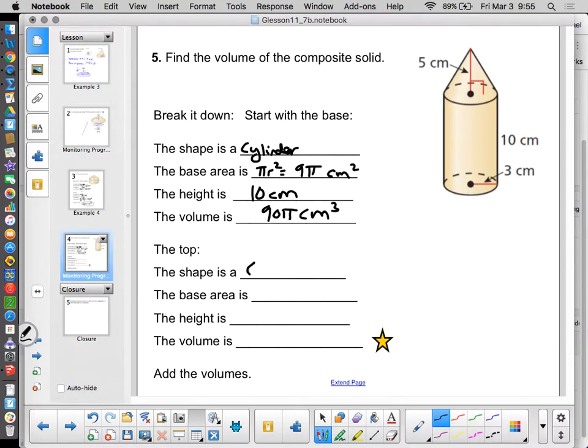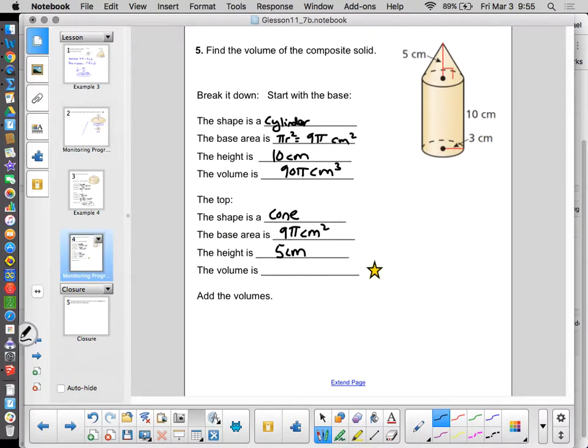The top, the shape is a cone. The base area is, again, 9 pi centimeters squared. The height this time is 5 centimeters, and the volume is something you need to do. Actually, finding that volume is your next step, remembering the shape is a cone, so the formula is different than for a cylinder. Don't forget to divide by three. There's your hint.